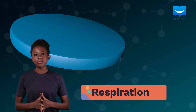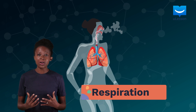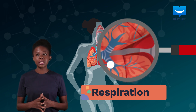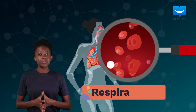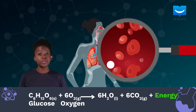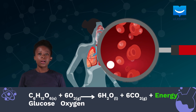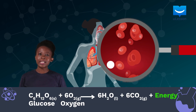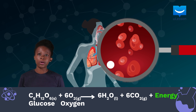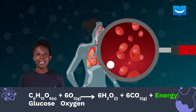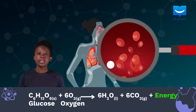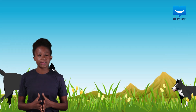During respiration, living cells take in oxygen and use it to oxidize glucose. As you can see from the chemical equation shown, the process of respiration releases carbon dioxide, which is the gas that animals breathe out. It also releases the energy needed for their activities such as movement.